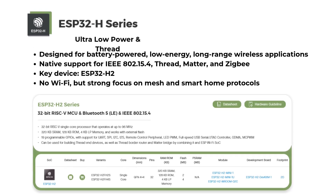The ESP32-H series is designed for ultra-low power and Thread applications — battery-powered, low-energy, short-range wireless. It has native support for IEEE 802.15.4, Thread, Matter and Zigbee. The key device is the ESP32-H2, which has no Wi-Fi but a strong focus on mesh and smart home protocols.